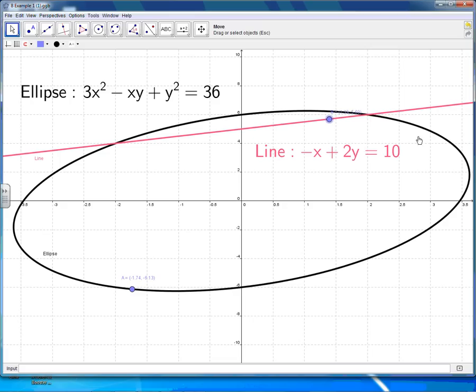And no matter where you are on this line, it is always true to say that if you take the x coordinate and times it by -1, and then add 2 times the y coordinate, you'll always get 10 as your answer, no matter where you are on the line. What I'm interested in today is these rather special points, and they're special because they happen to be on the ellipse and they happen to be on the line.